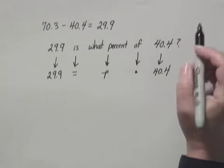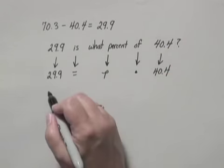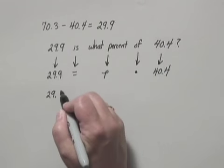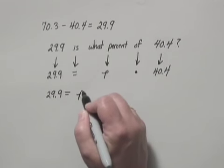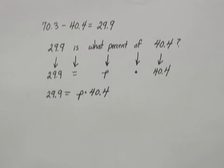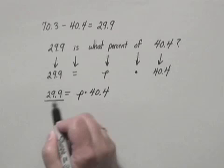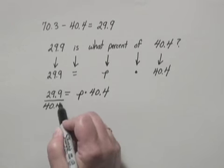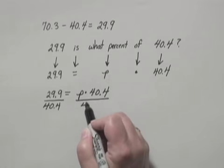And we have an equation. We have 29.9 equals P times 40.4. And we divide by 40.4 on both sides.